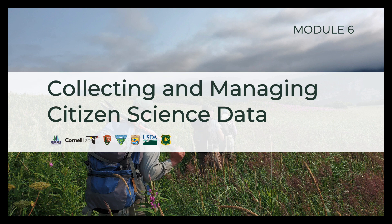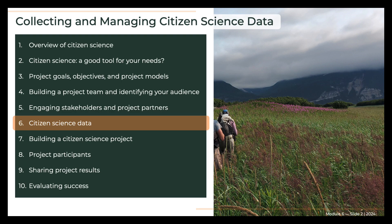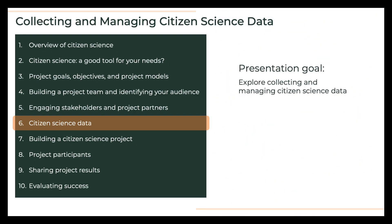This program was developed by several partners, including staff from the U.S. Forest Service, the National Park Service, the U.S. Fish and Wildlife Service, the Bureau of Land Management, and Schoodic Institute at Acadia National Park. This is the sixth module in our 10-module series. Module 5 discussed expanding your project team by working with stakeholders and partners. This presentation explores the broad topic of collecting and managing citizen science data to achieve scientific and resource management objectives for parks, forests, grasslands, refuges, or similar lands and waters.